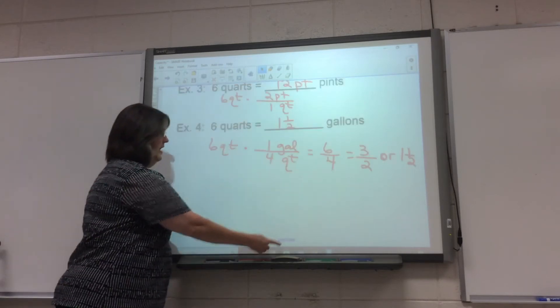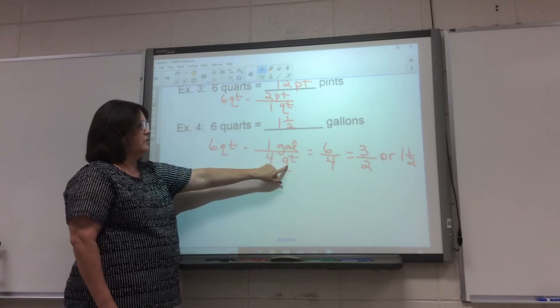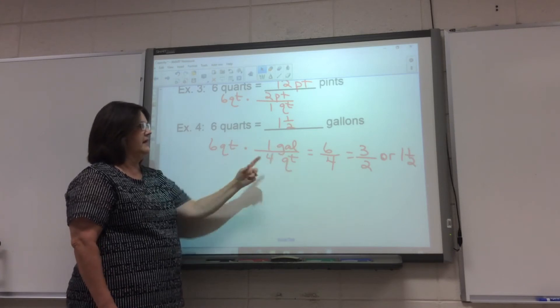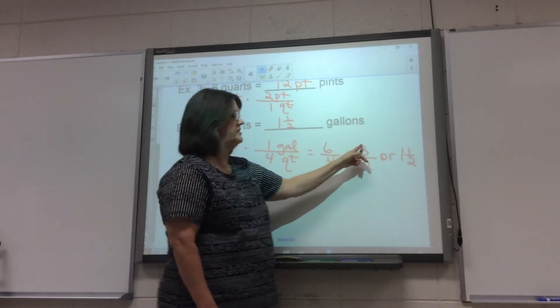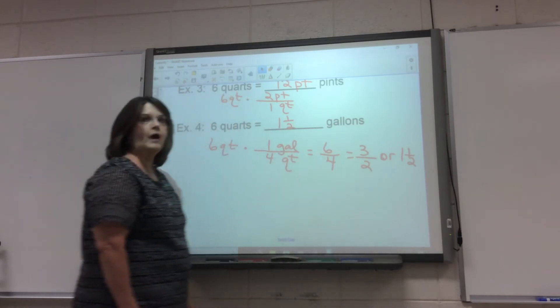All right, this one we have quarts and we're headed to gallons. So six quarts, four quarts in one gallon. That gives me six over four, which simplifies to three over two, or one and a half gallons, or you can even write 1.5.